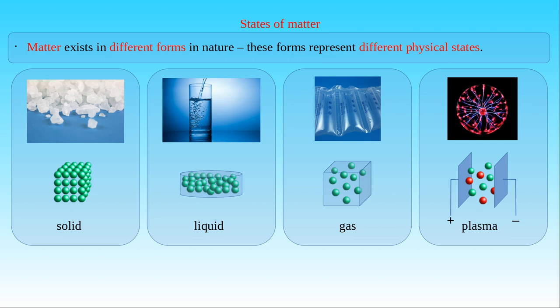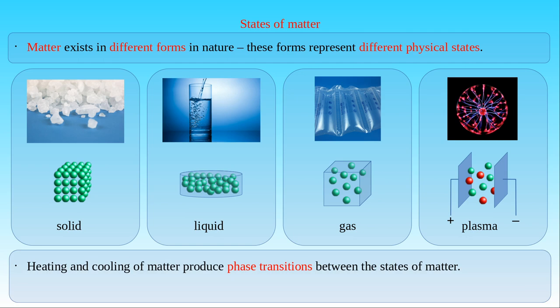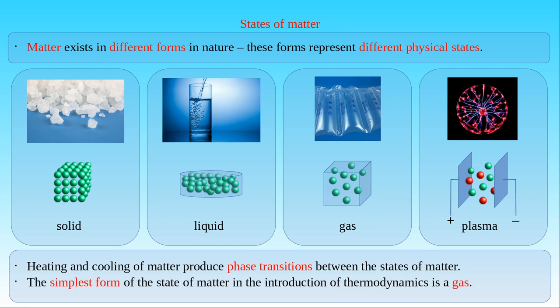Matter does not necessarily stay in one state or another in nature, but there is a continuous transition between its states. If we heat or cool matter, we can produce phase transitions between the states of matter. By comparing the particle descriptions of the different states of matter with each other, we see that gas has the simplest model since the distance between the gas atoms or molecules is relatively large. This allows us to use an approximation where we can neglect the interactions between the particles. Since a gas consists of electrically neutral particles, the Lorentz force does not complicate the description of the medium. Therefore, it is convenient to choose a gas as the simplest form of matter when we introduce the basic concepts of thermodynamics.